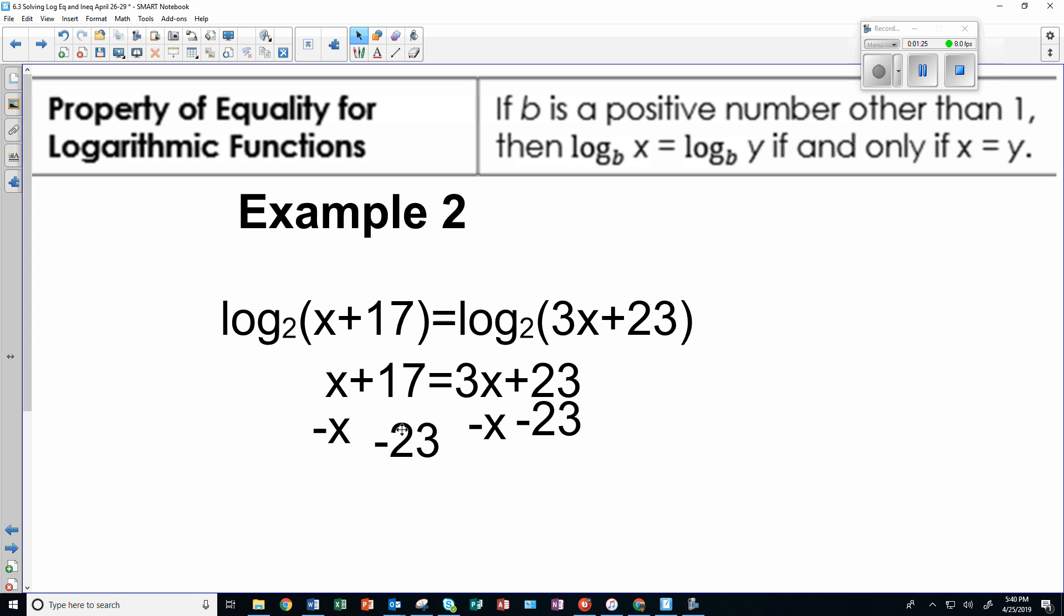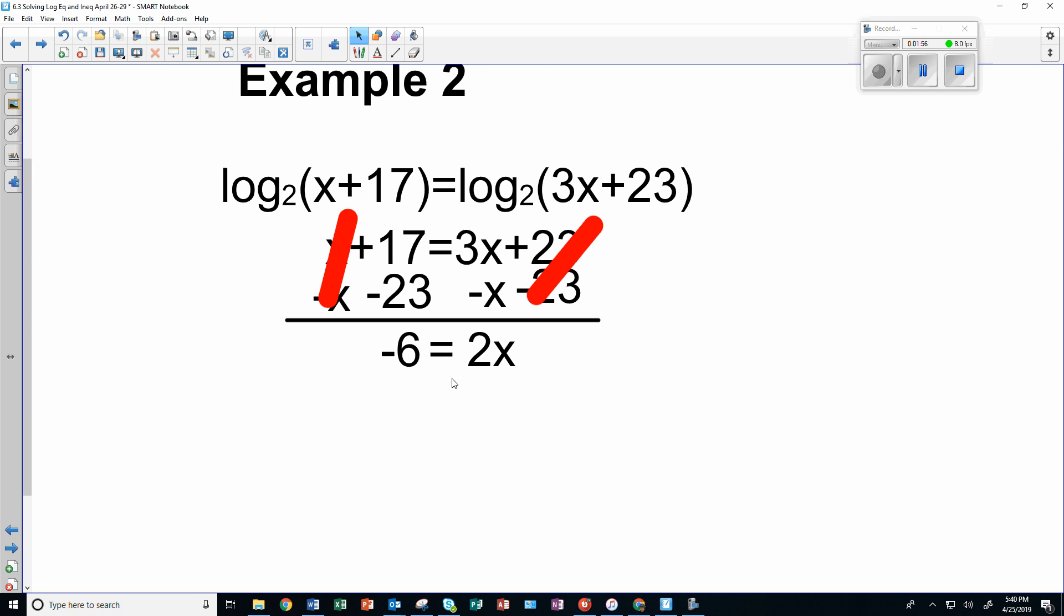When you finally clear all this up, you're going to get something like this. I can cancel that out, and I can cancel that out. So my final result here: I'm going to end up with negative 6. I move it right there, bring down my equals, and then I have 2x.